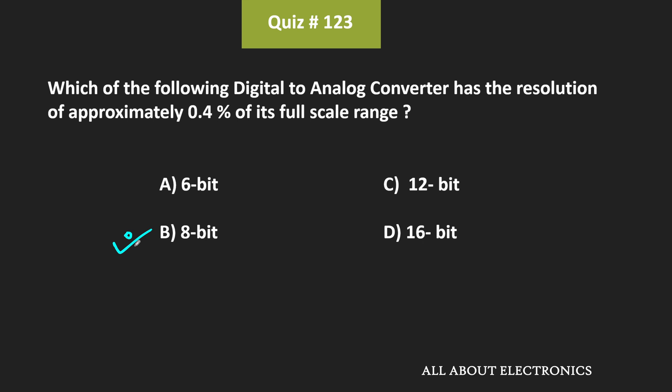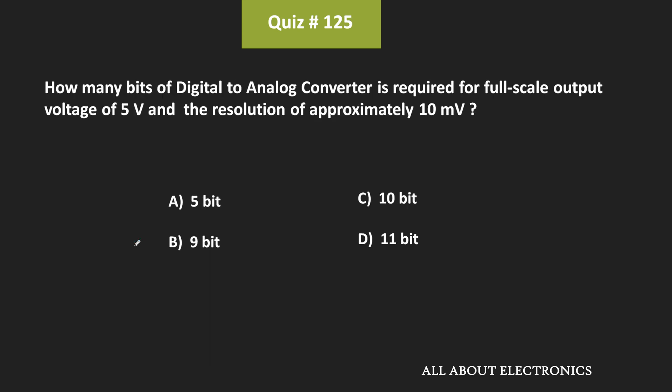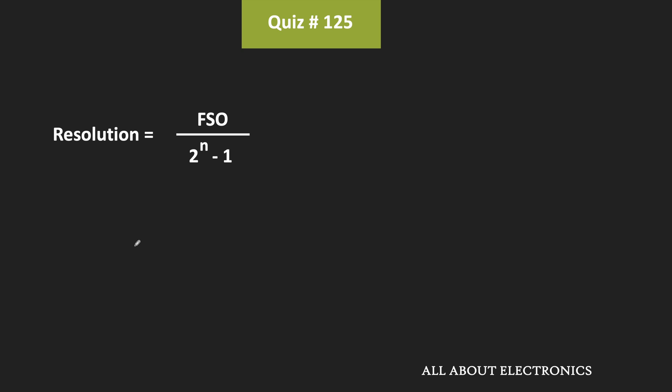Now let us move to the next question. The second question is also very similar to the first one. In this question, we have been asked: how many bits of DAC are required to get a full scale output voltage of 5V with a resolution of approximately equal to 10mV? We know that the resolution of the DAC can be given as full scale output voltage divided by 2 to the power n minus 1, where n is the number of bits. Here, the full scale output voltage is equal to 5V, while the approximate resolution is equal to 10mV.